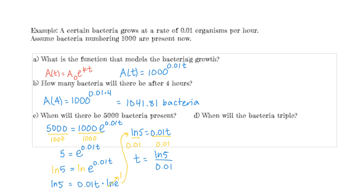I recommend leaving the exact answer as the natural log of 5 divided by 0.01 if you need to continue the problem. But since this is the end, we can go ahead and find the decimal approximation, which is 160.94. So it will take almost 161 hours — measured in hours — for the bacteria to reach 5000.